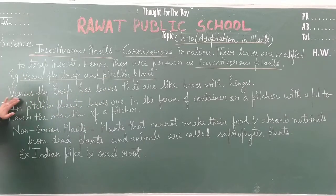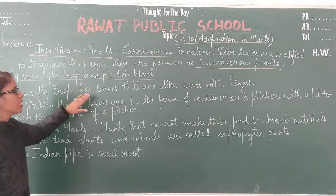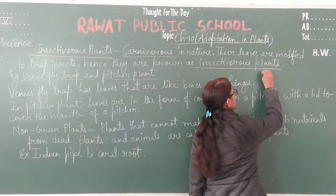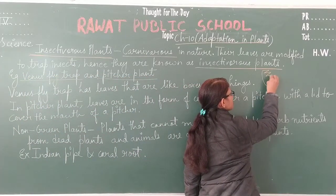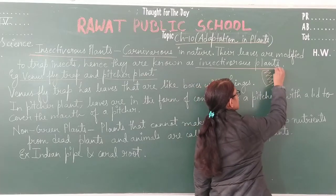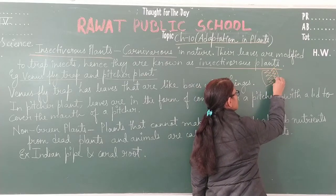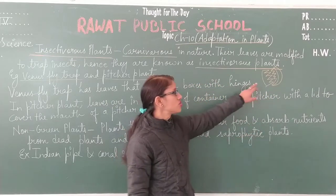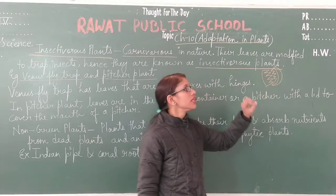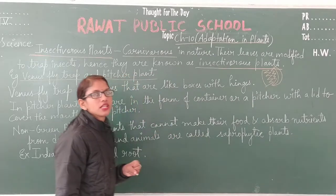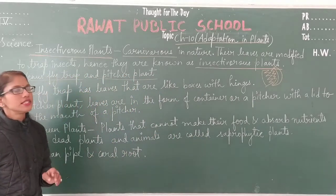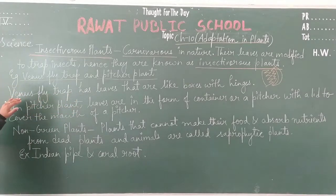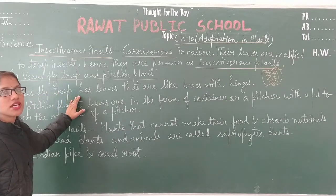The first example is the Venus flytrap. These plants have leaves that are like hinged boxes. Hinges are present on the leaves, and when an insect touches these leaves, the hinges shut and catch the insect. These are the modified leaves of the Venus flytrap and how they catch insects.